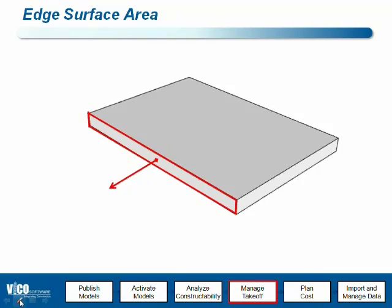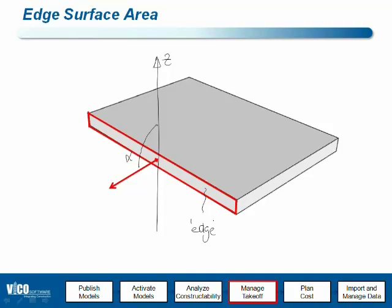In addition to the normal vector, we have the project's vertical — that's Z. What we can do is determine the angle between them, and we just apply rules to that. So if the angle is between 90 and minus 90 degrees (so that's 270 degrees), we classify it as an edge.